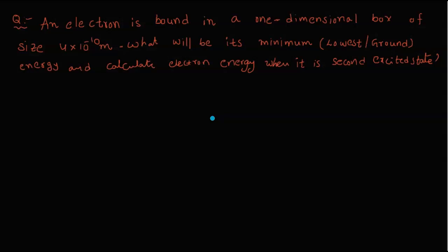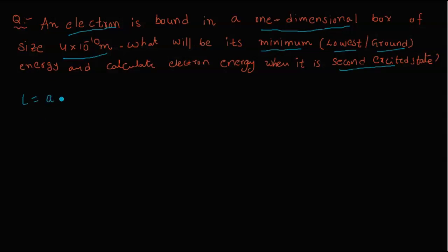Now let's come to the question. An electron is bound in a one-dimensional box of size — that means length — 4×10⁻¹⁰ meters. The length of the box is given, and some textbooks use the notation 'l' while others use 'a', so I am introducing both notations here.